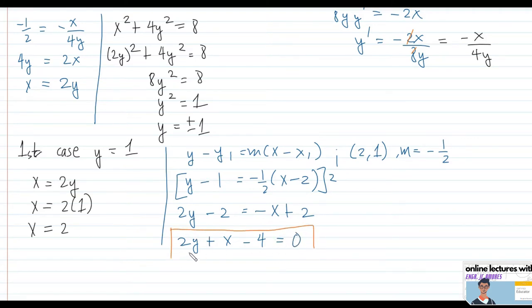Multiplying both sides by 2: 2y minus 2 equals negative x plus 2, which rearranges to x plus 2y minus 4 equals 0. This is the equation of the first tangent line.